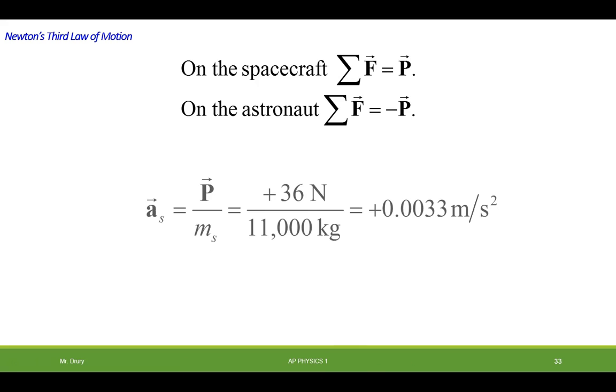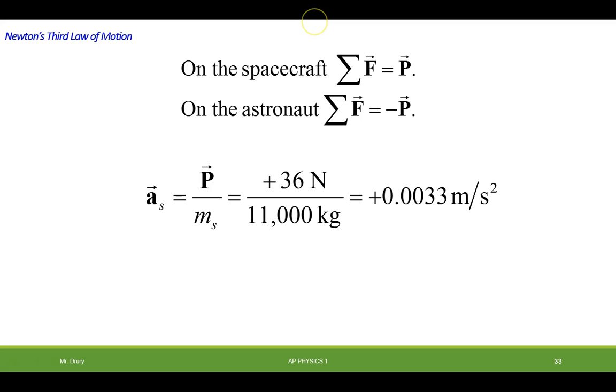So the two forces are equal and opposite. So we use Newton's second law and find out the acceleration of the spacecraft. You would have a push of 36 Newtons divided by 11,000 kilograms. Comes out to be an acceleration of 0.0033 meters per second squared.